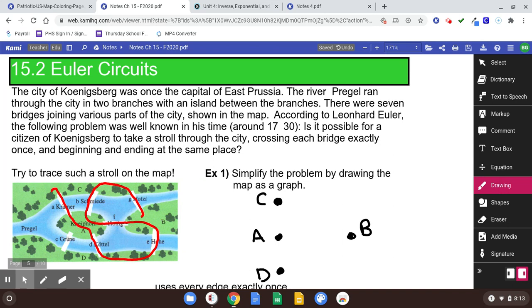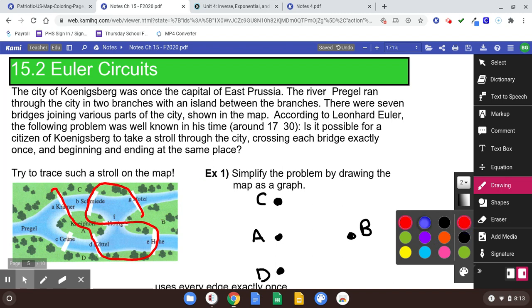They don't really have to be laid out in this specific manner, but I like to put the dots about the same places where the landmasses are. It looks like there are two bridges from C to A, and there are also two bridges from A to D. There's a bridge from A to B, and there's a bridge from B to D, and a bridge from B to C.